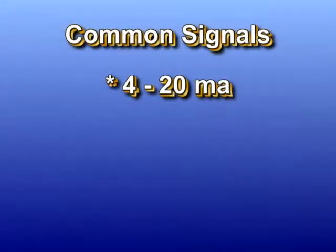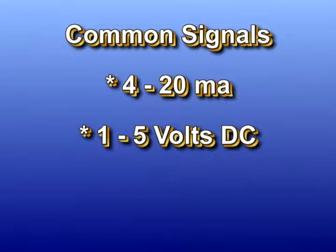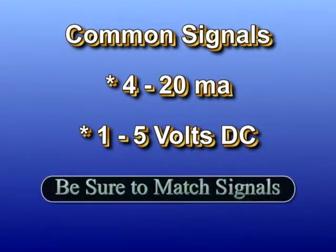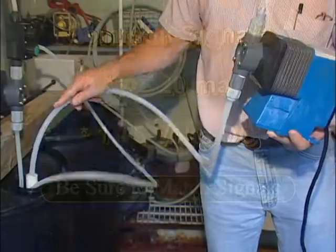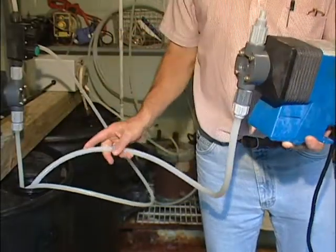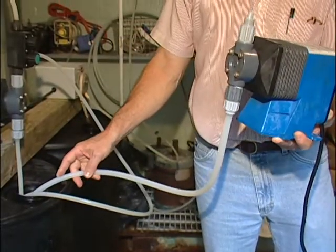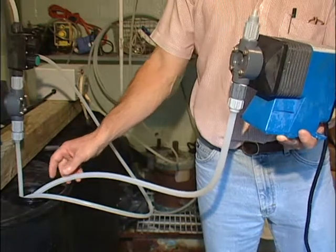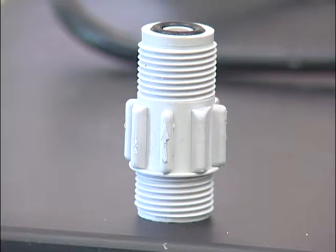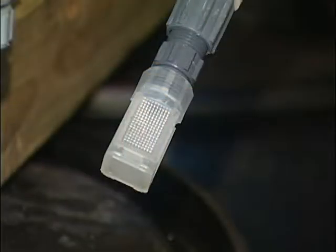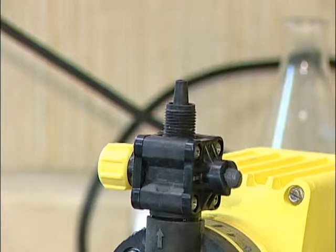Some pumps can be programmed to respond to signals set in a prescribed range. Some pumps run off a 4 to 20 milliamp signal, while others respond to a DC current of 1 to 5 volts. Operators should be careful to match the signals from the sensors to the pumps. Other essential pieces of equipment are check valves, foot valves, and four-way valves.